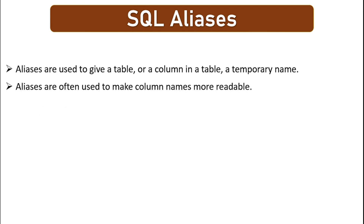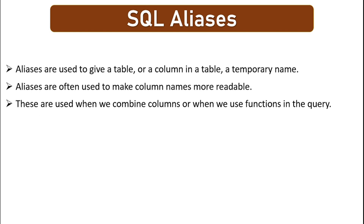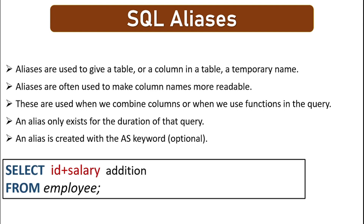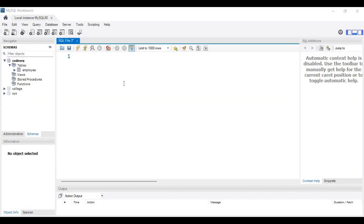Aliases are very useful when a column name is not user-friendly. They make output more readable, and you'll often see them when combining columns using expressions or functions. Remember, it is a temporary name — it only exists for the duration of the query and won't affect the original column name in the table. We use the AS keyword to define the temporary name. It is optional — you can also just add a space — but I recommend using AS to make the query more readable.